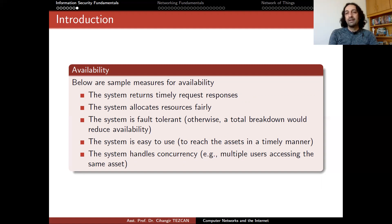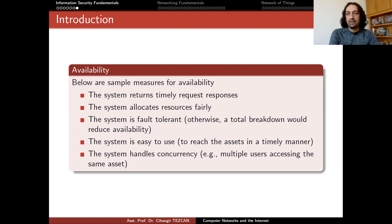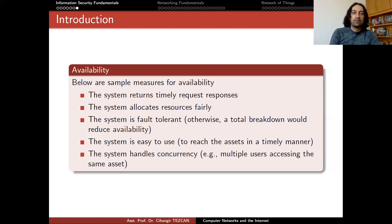For instance, if you wait hours or days the server will eventually respond, but this is of course unacceptable. Other availability measures include: the system allocates resources fairly — especially important in classrooms or multi-user services where one user shouldn't affect others. The system is fault tolerant, otherwise a total breakdown will reduce availability. The system is easy to use to reach assets in a timely manner. And the system handles concurrency, for example multiple users accessing the same asset simultaneously.